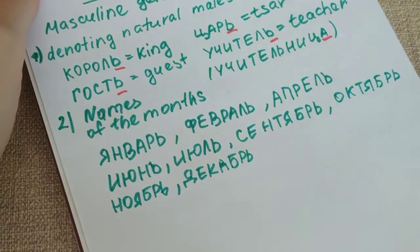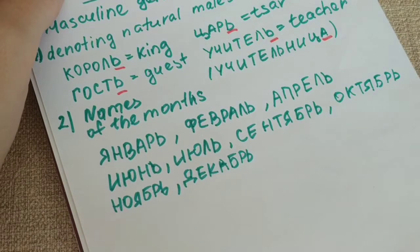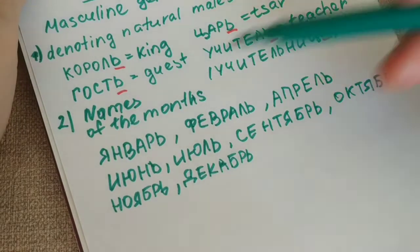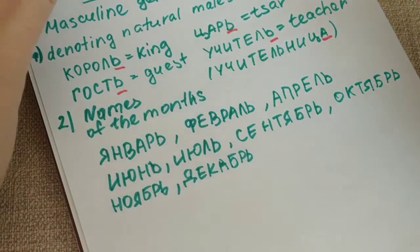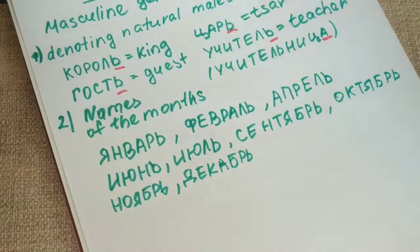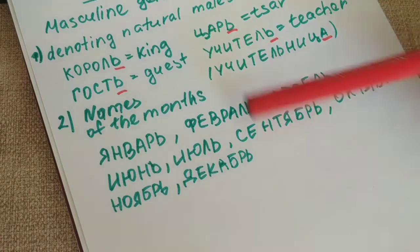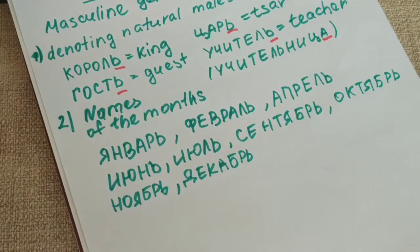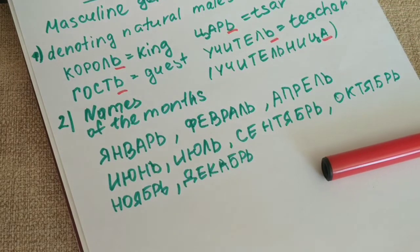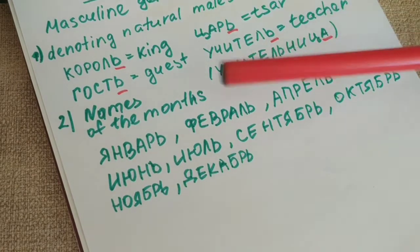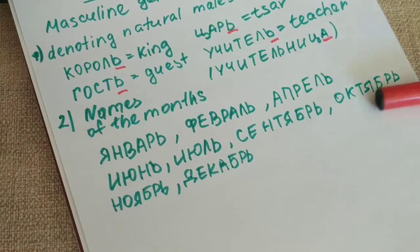There are some names that I skipped because they have a different ending, but all of them are of the masculine gender. Since we're talking about nouns ending in the soft sign, I gave you the examples of the names of the months which are ending in the soft sign and which are of the masculine gender.